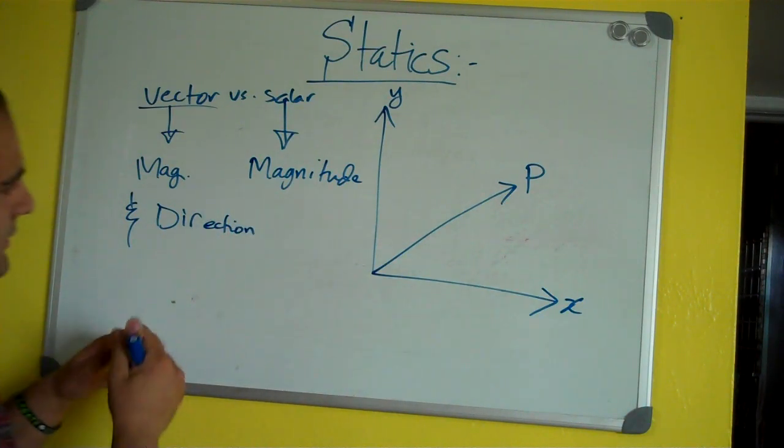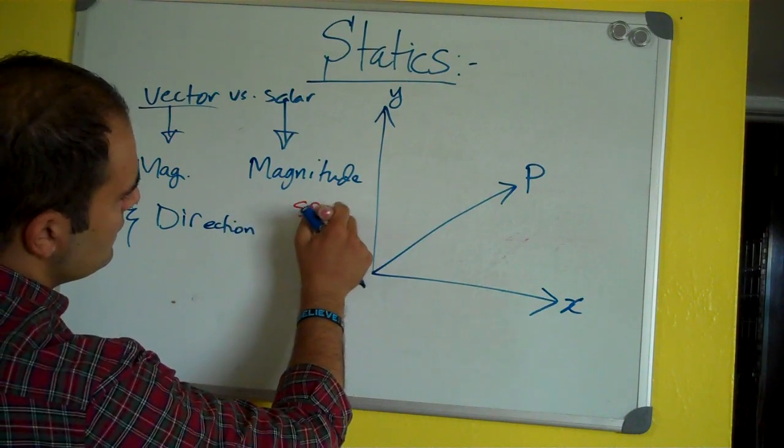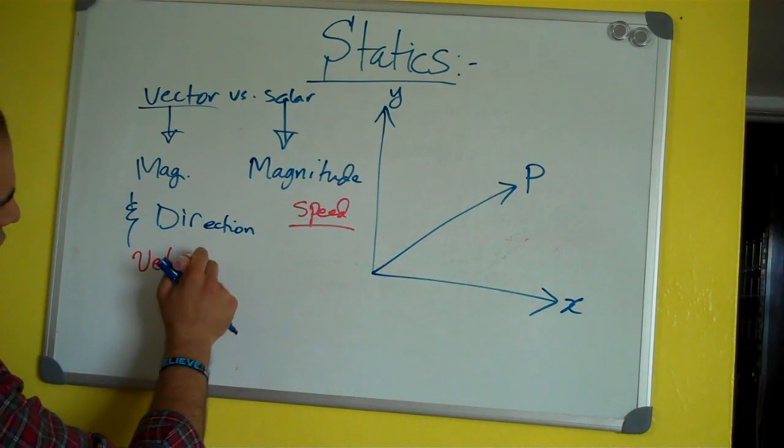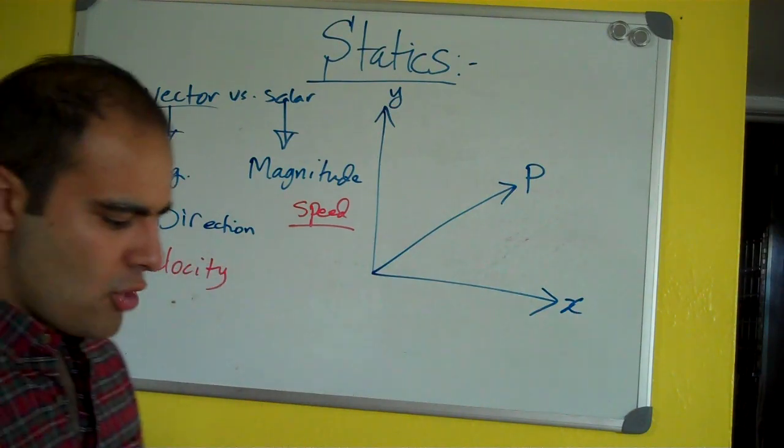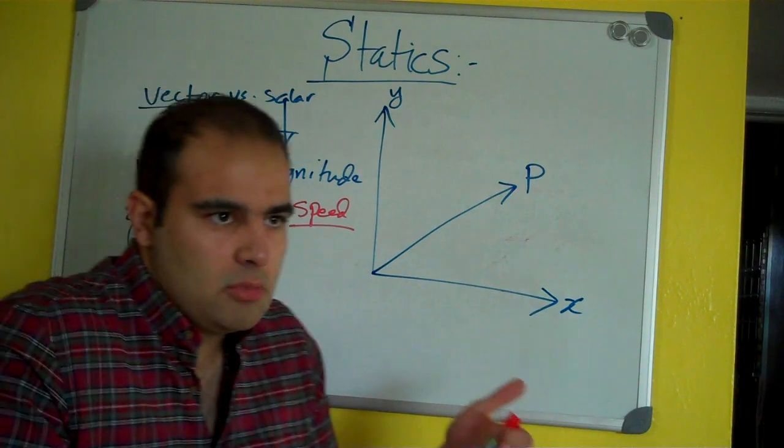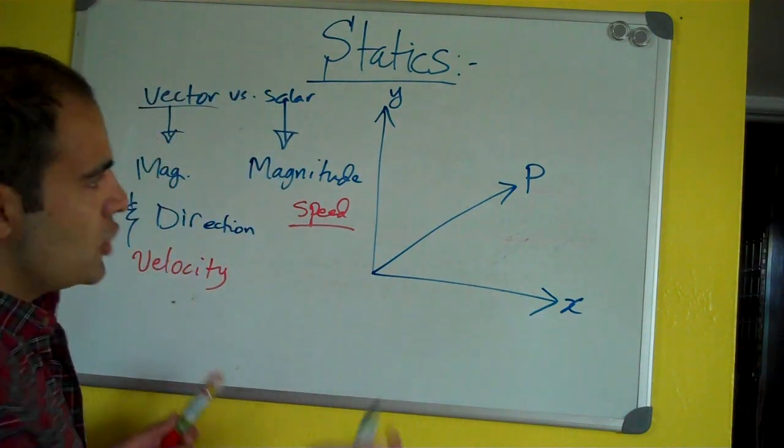For example, you're talking, like, speed versus velocity. Right? Going 30 mile per hour west. Vector. Going 30 mile per hour only at speed.